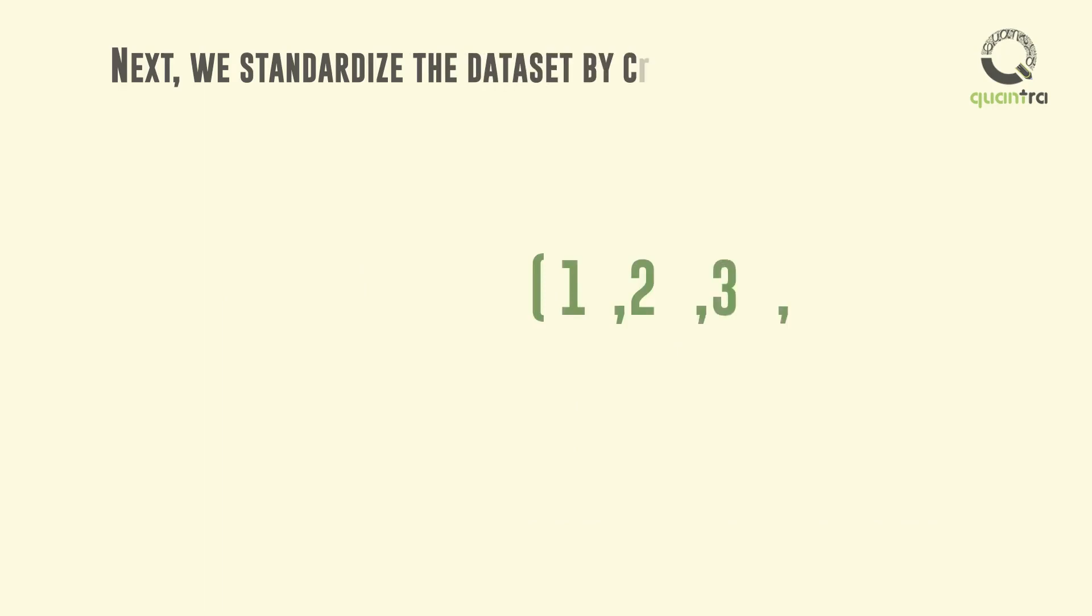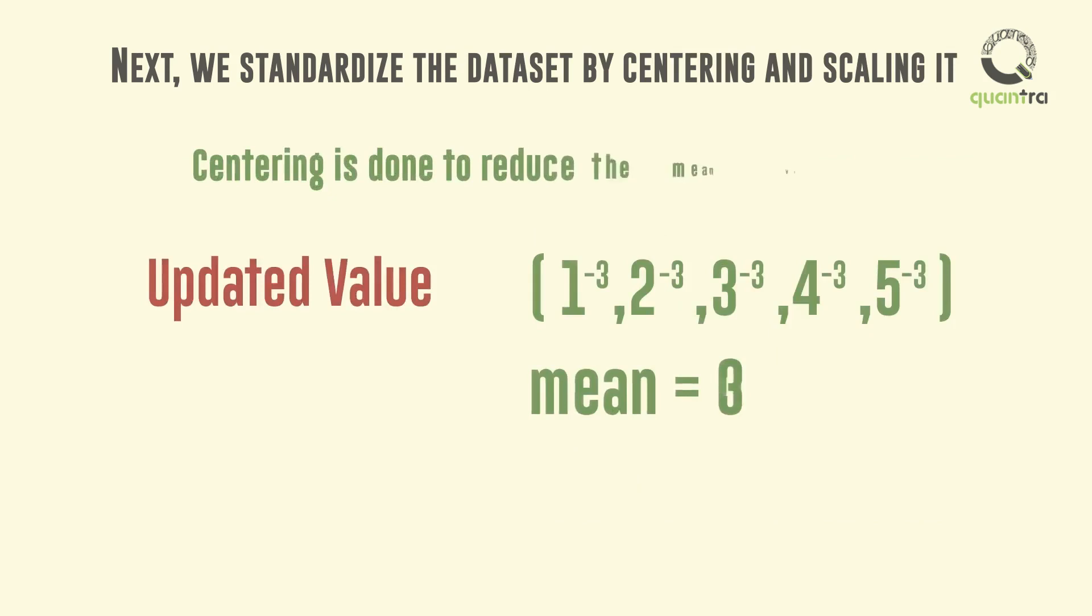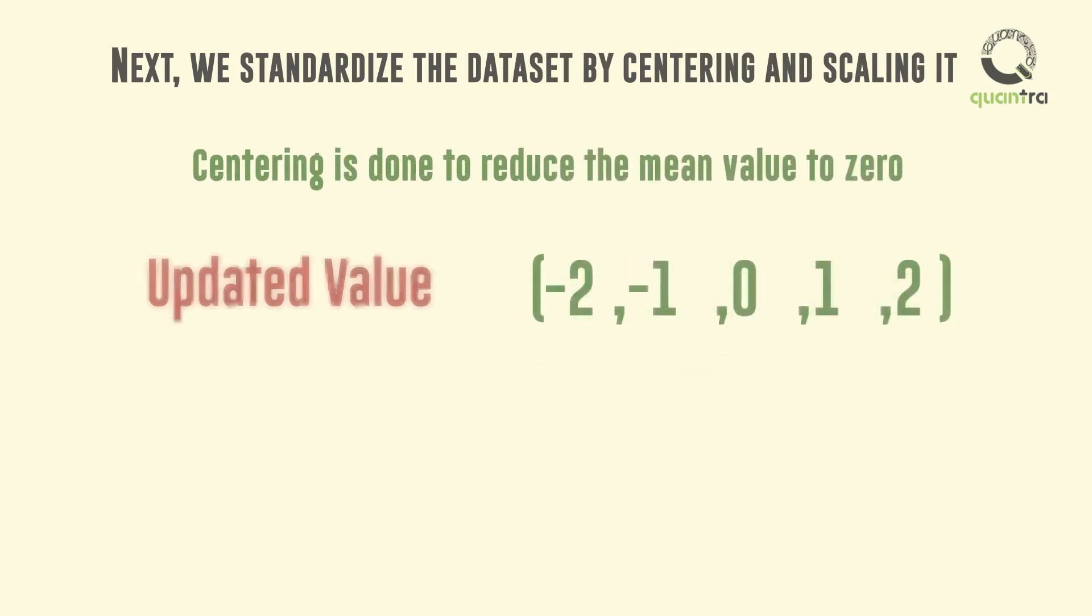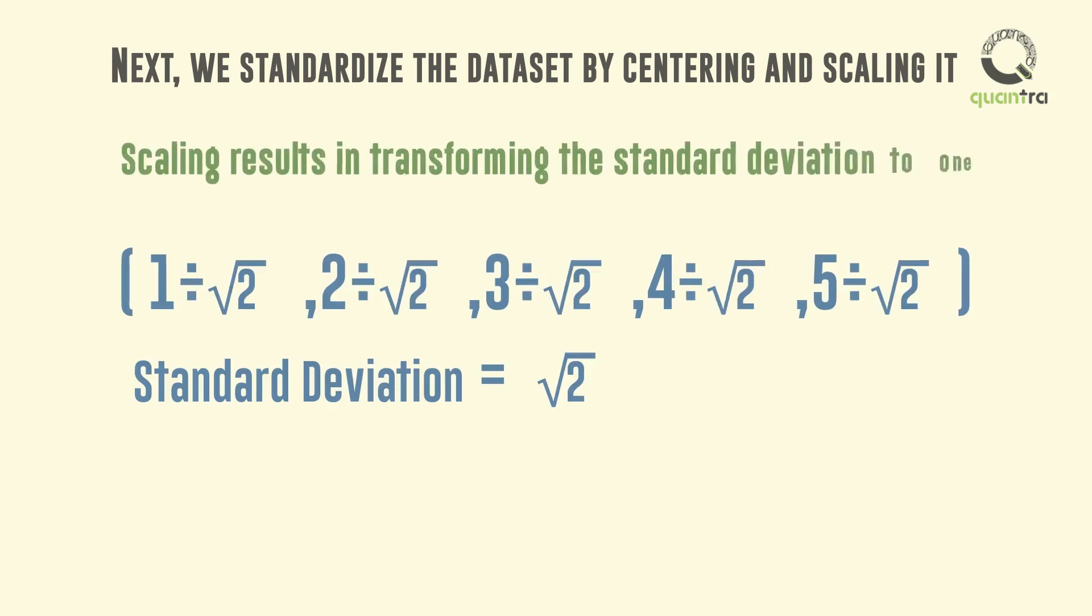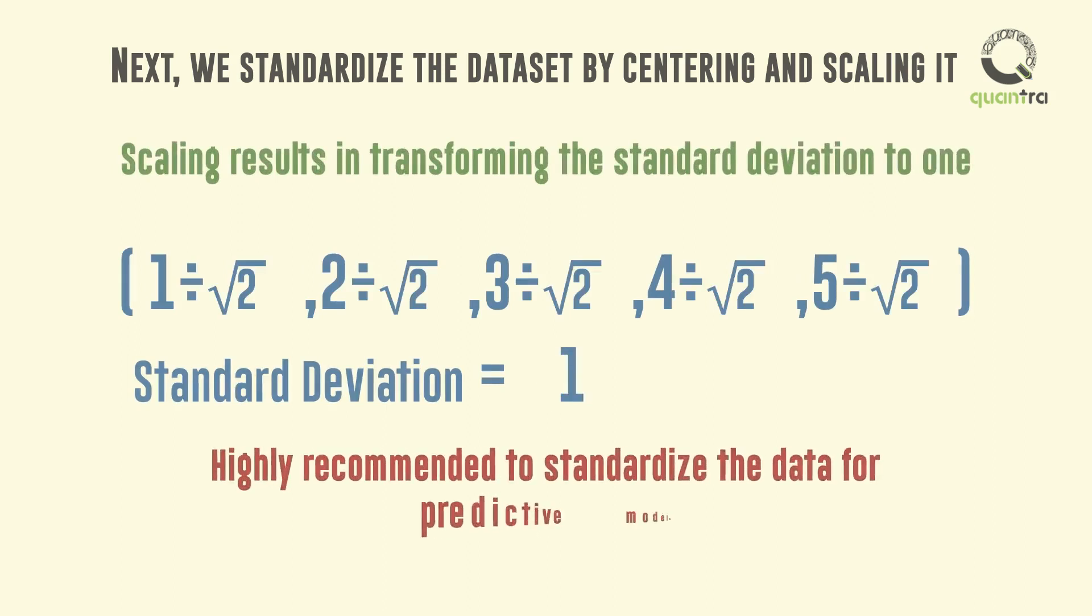Next, we standardize the data set by centering and scaling it. Centering is done to reduce the mean value of the data to zero. Scaling refers to dividing each entry by the standard deviation of the data. This results in transforming the standard deviation of the data to be one.